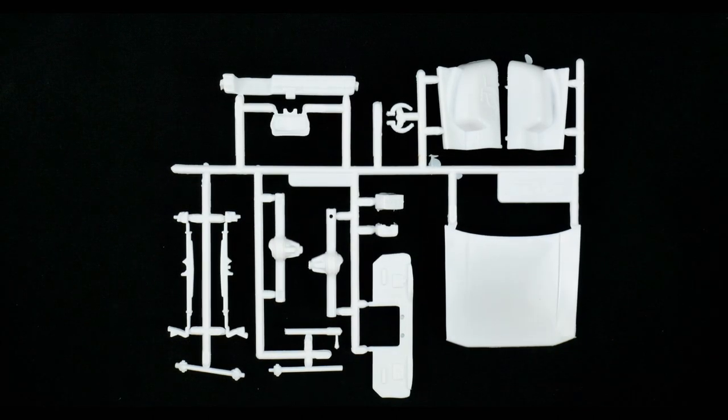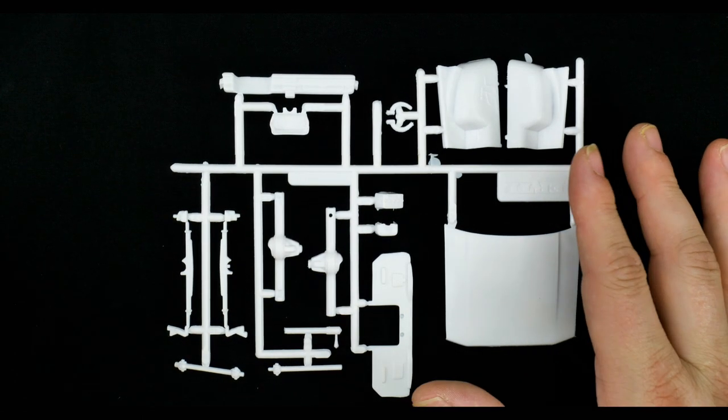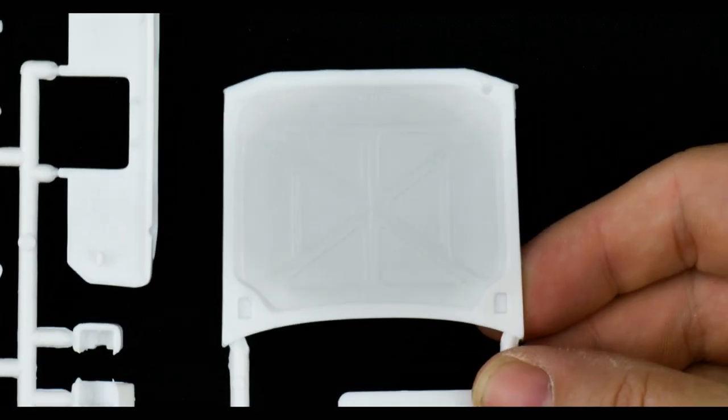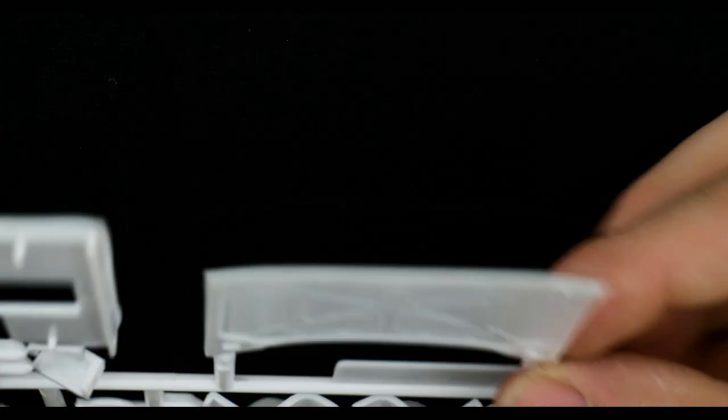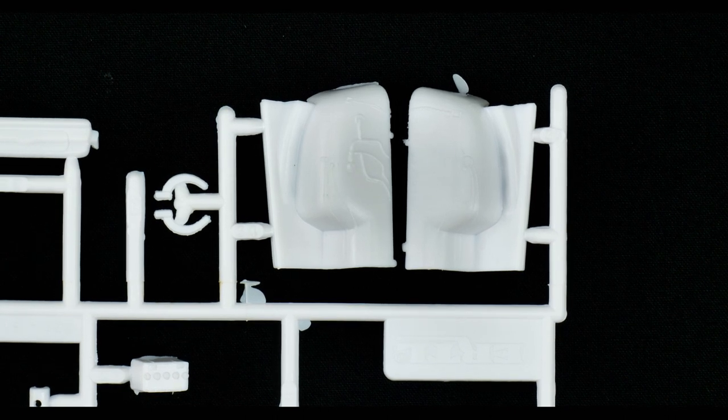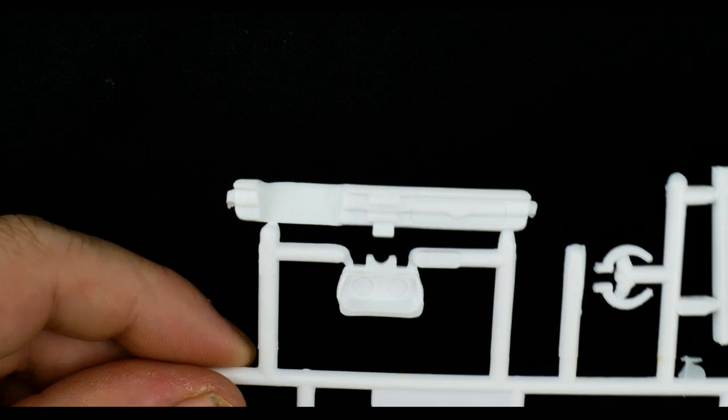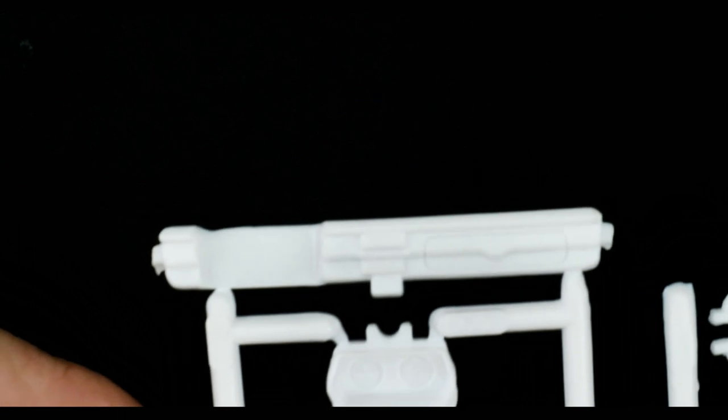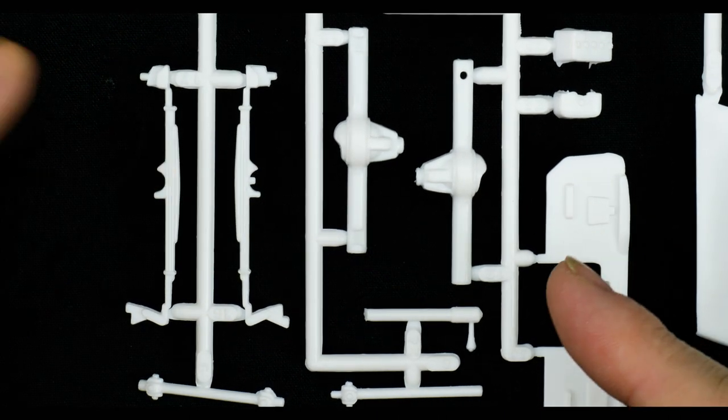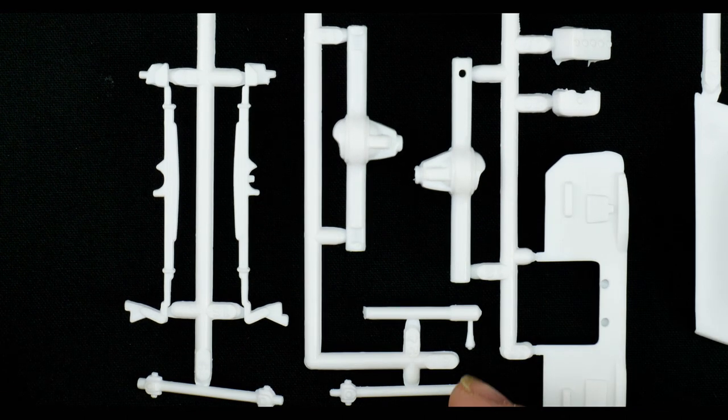And moving right along to the next parts tree which has sort of everything. Hood, dash, inner engine compartment fender wells. The hood. It's a dash, two-piece. The rear axle, spring, leaf springs, drive shaft, drive shafts, steering column.